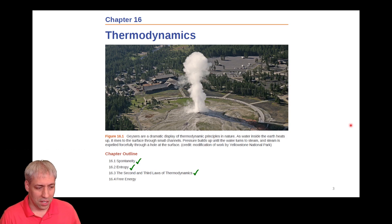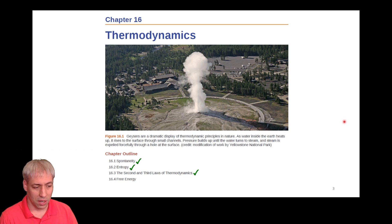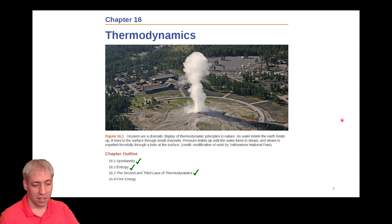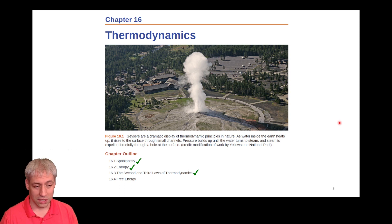So far in chapter 16, we've gone through spontaneity — defining what it is. Then we used entropy as a way to talk about spontaneity or give context to spontaneity. And then we did the second and third law of thermodynamics, which basically says entropy must increase for a process to be spontaneous.